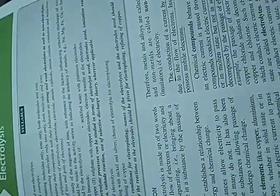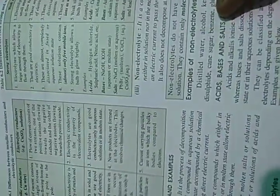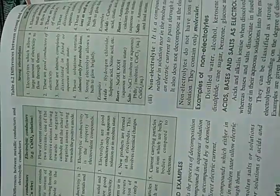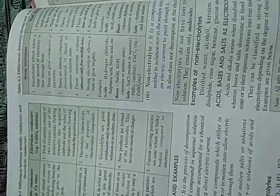Good morning, dear students. In our previous class, we had seen in Chapter 6 what is electrolysis and what are electrolytes and non-electrolytes. Non-electrolytes are compounds which in aqueous or molten state allow electricity to pass through them. When these electrolytes are made aqueous, they dissociate — they decompose to form ions.